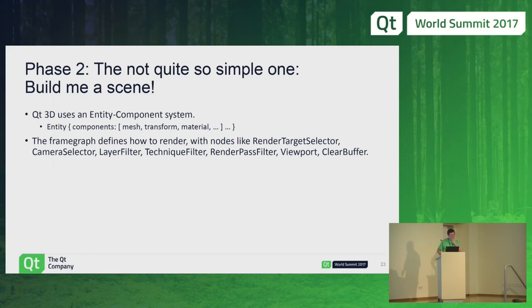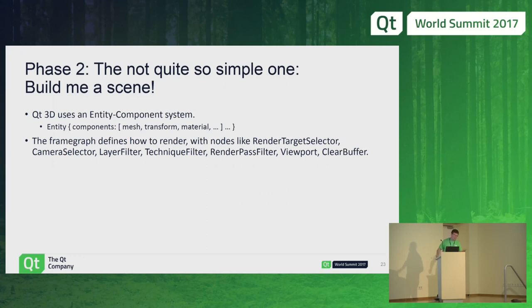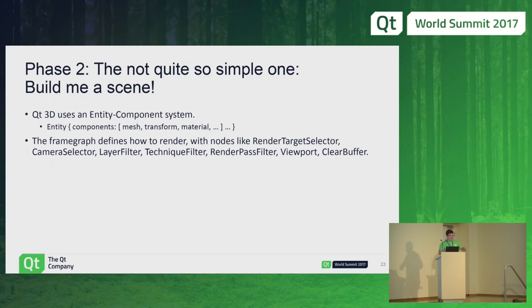Then we got into the meat of the thing: let's use Qt 3D to build a scene. Those familiar with Qt 3D know there's an entity-component system. If you want a 3D object like a cube, it ends up as an entity with components: a mesh providing geometry like vertices, an optional transform for rotation, translation, scaling, and then a material. Then there's the so-called frame graph, which tells you how to render. You see things like render target selector, camera selector, and so on.